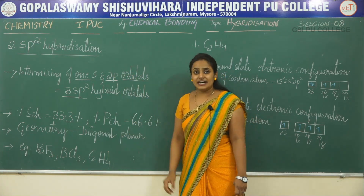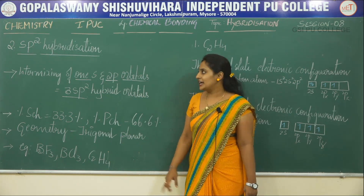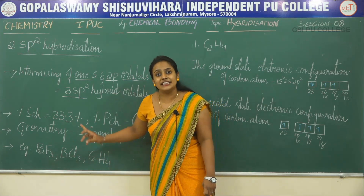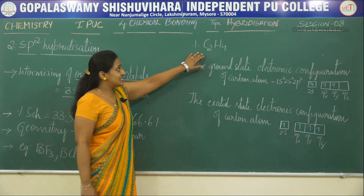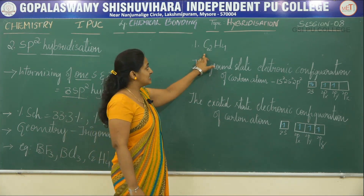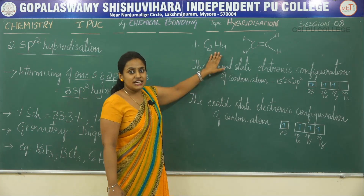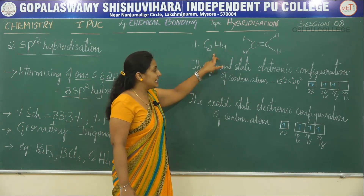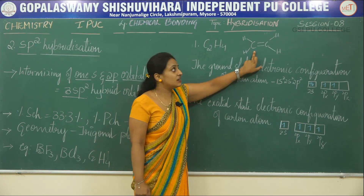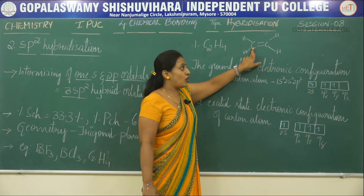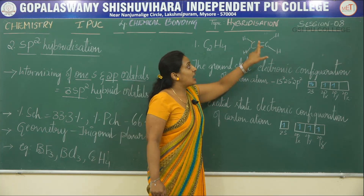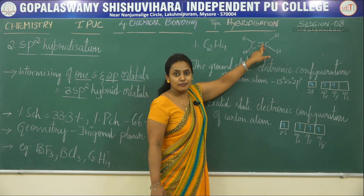Now let us consider an example by looking into the illustration. The first example is C2H4, that is the ethene molecule. In ethene, one carbon atom is bonded with two hydrogen atoms, and each carbon is bonded with the other carbon atom by one sigma bond and one pi bond.